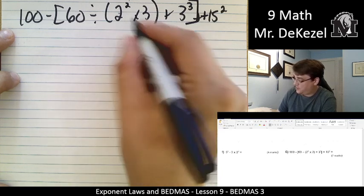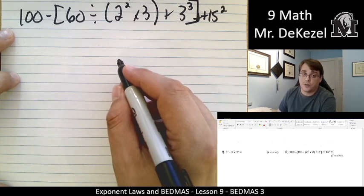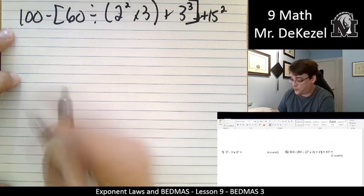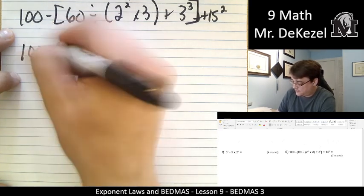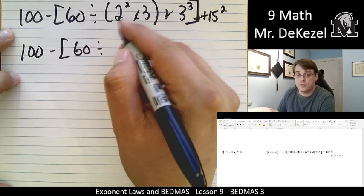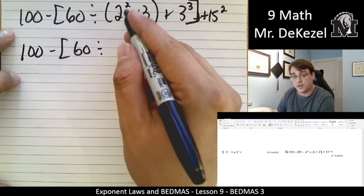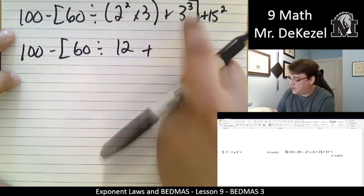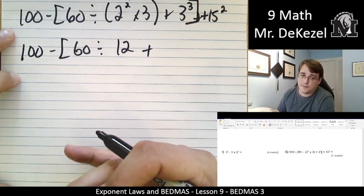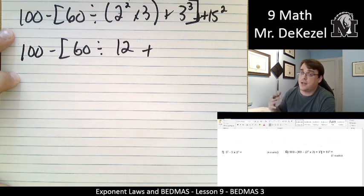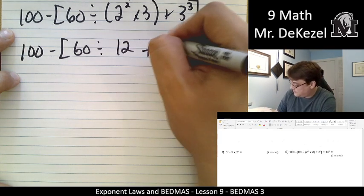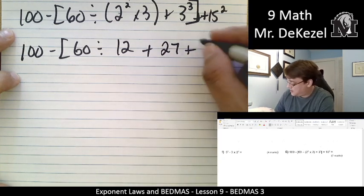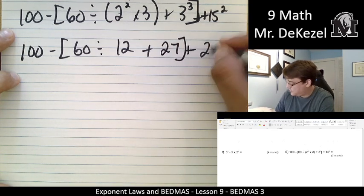So we do 2 to the power of 2 which is 4, and then multiplied by 3 is 12. So I'm going to do that all at once. 2 times 2 is 4, like 2 squared is 4 times 3 is 12, so that goes there. 3 to the power of 3, that's 3 times 3 times 3, so that's 9 times 3 which is 27.